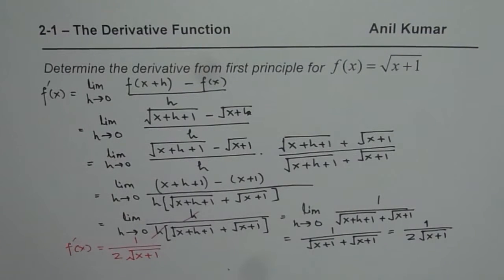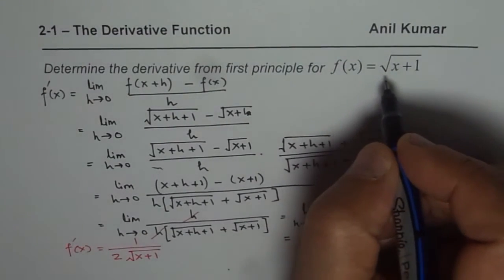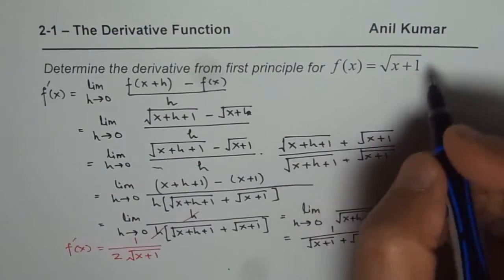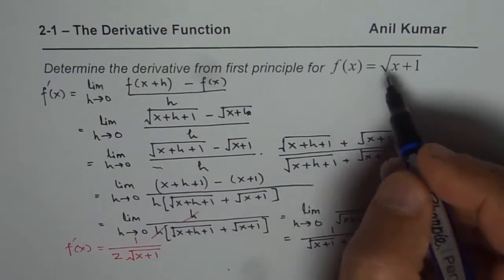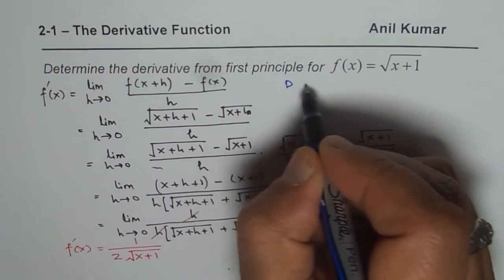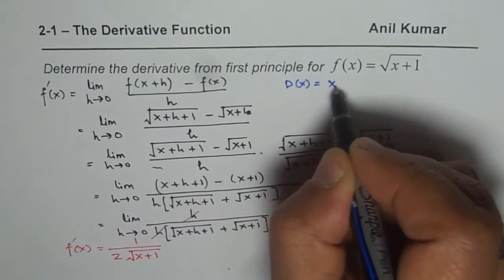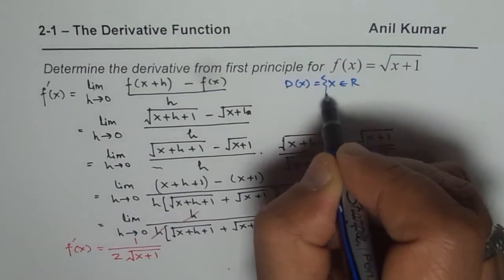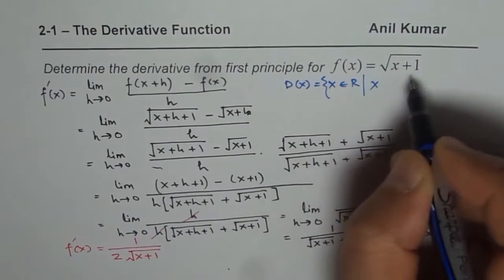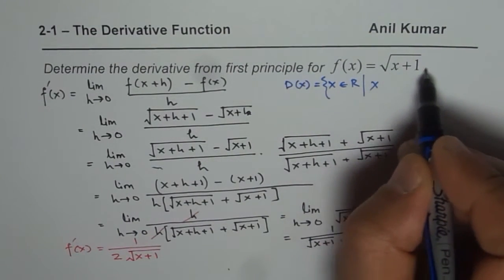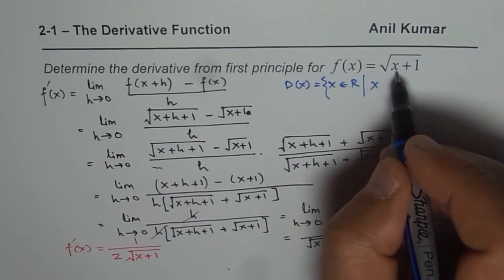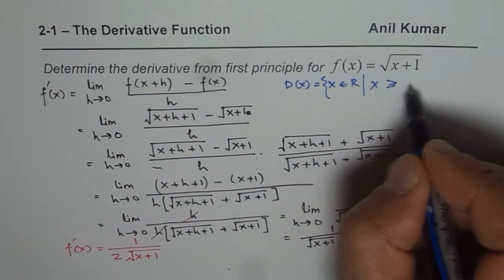Now let's find the domain and range for the function and its derivative. For f(x) equals square root of (x plus 1), since we need a non-negative value under the square root, the domain is x belongs to real numbers with x greater than or equal to minus 1.